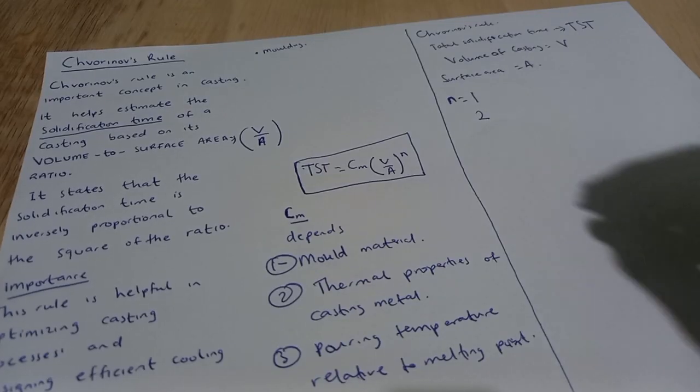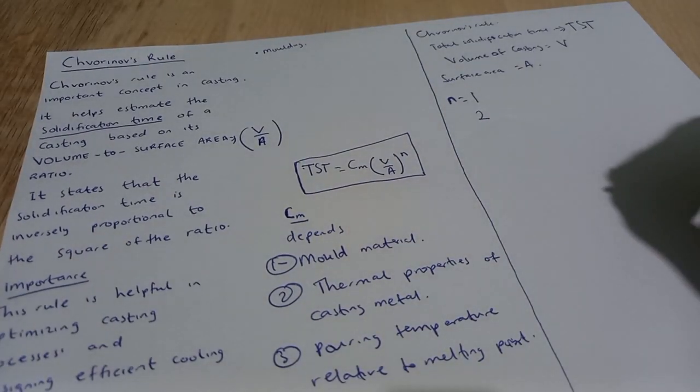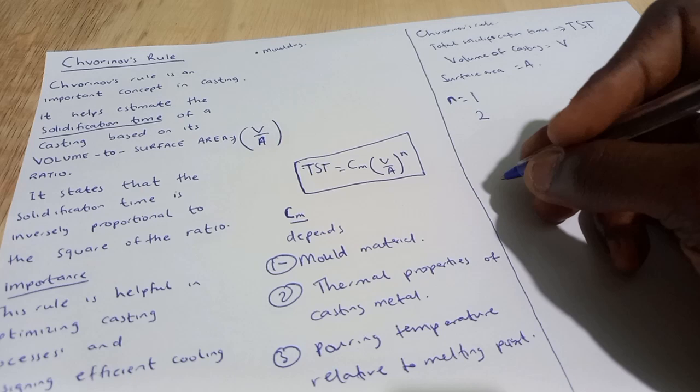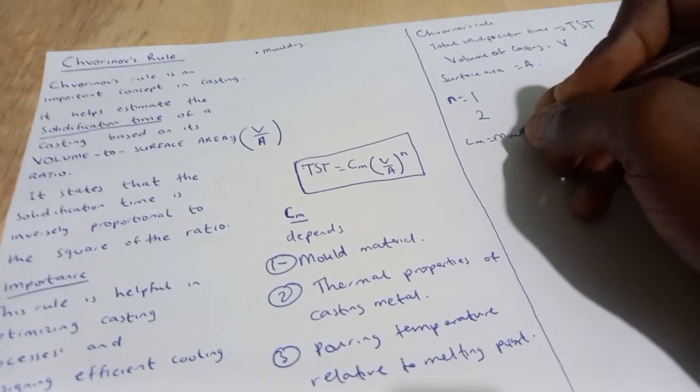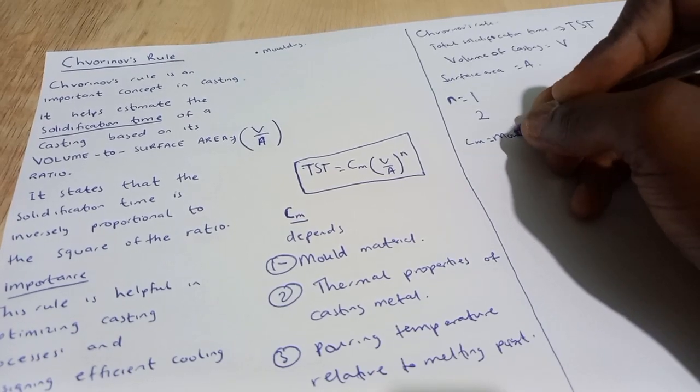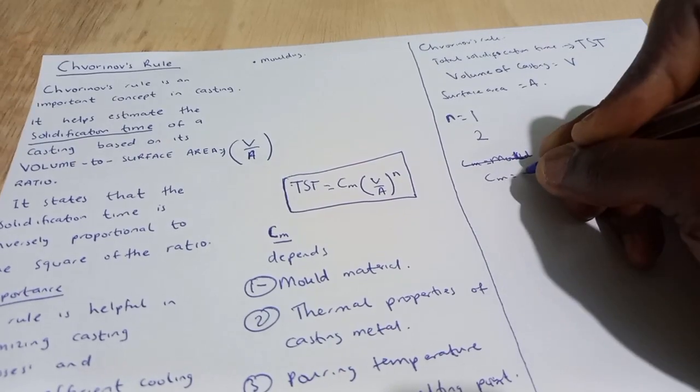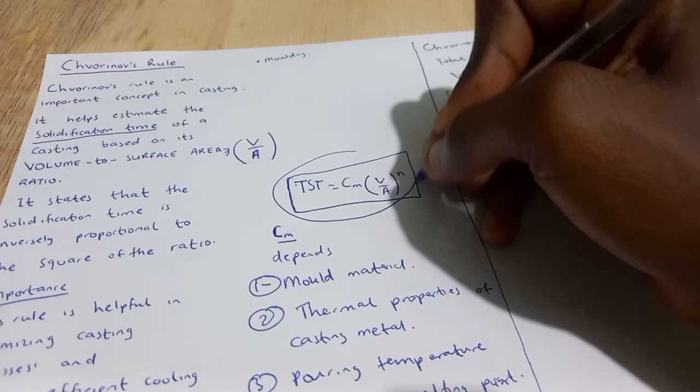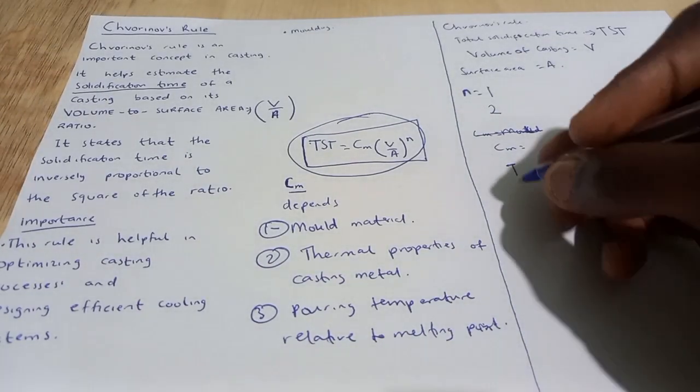So CM is the mold constant. And in that one we can derive the whole formula now that the TST is the total solidification time. The CM is the mold constant. So by this we can use the Chvorinov to determine the cooling of the cast.